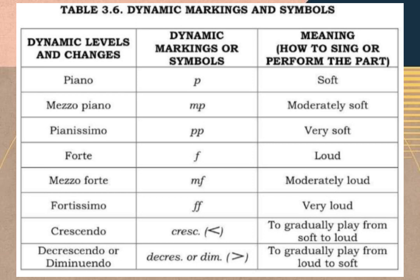First, we have piano. Its marking or symbol is P, and its meaning or how to sing the part is soft. Second, we have mezzo piano. Its marking or symbol is MP, and how to sing or perform the part is moderately soft.